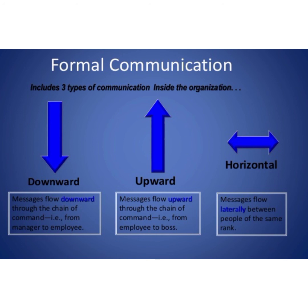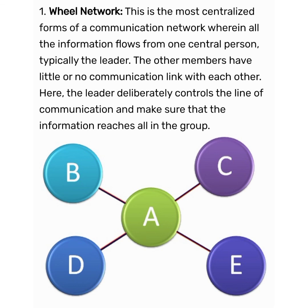Next, we are going to learn about the different formal communication networks. The first one is Wheel Network. In Wheel Network, all subordinates of a superior communicate through him only, as he is the hub of the wheel. They are not allowed to communicate among themselves directly. This is the most centralized form of communication network, wherein all the information flows from one central person, typically the leader.